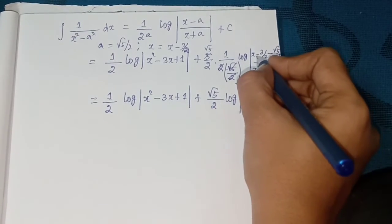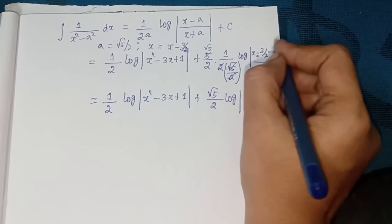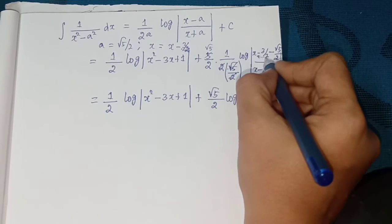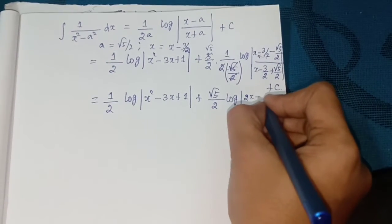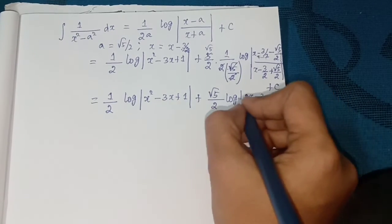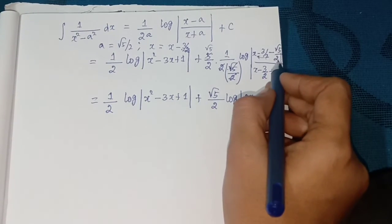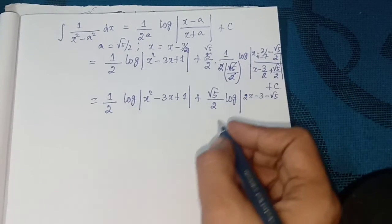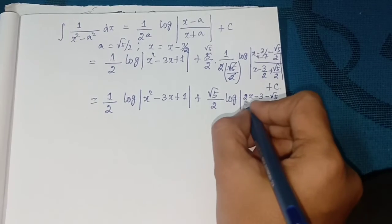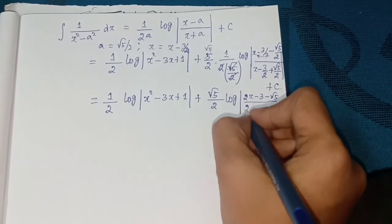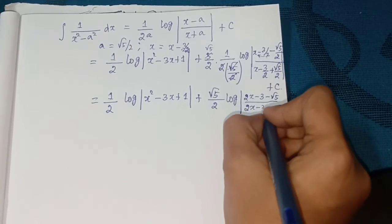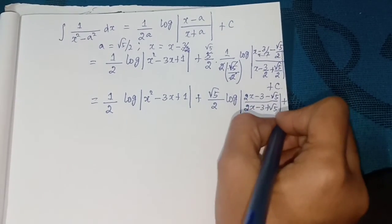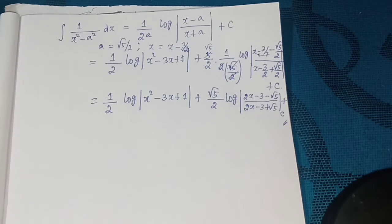So the final answer is: (1/2) log |x² - 3x + 1| plus (√5/2) log |(2x - 3 - √5) / (2x - 3 + √5)| plus c. This is a very important 5-mark problem.